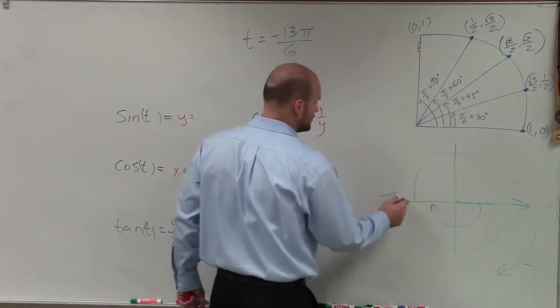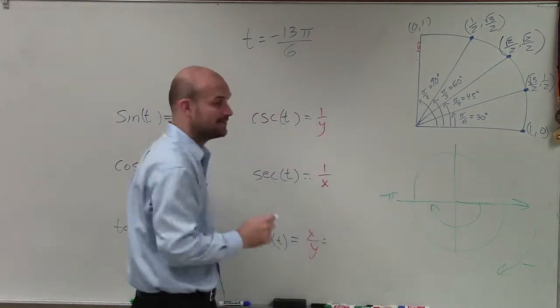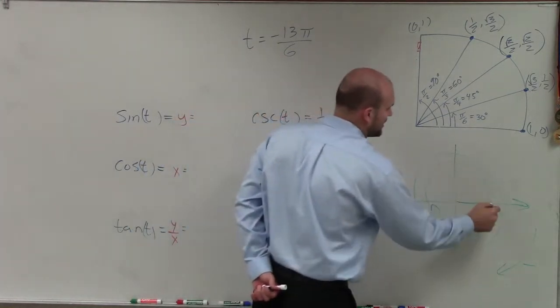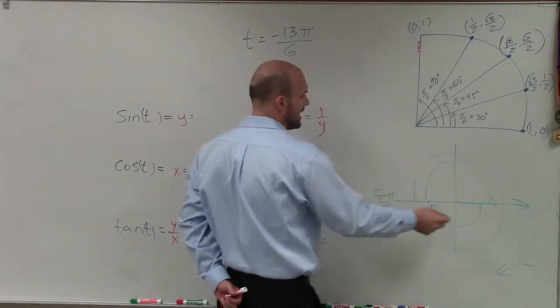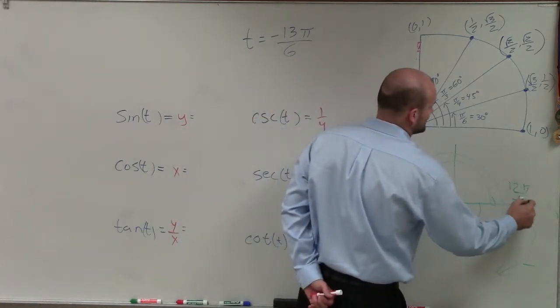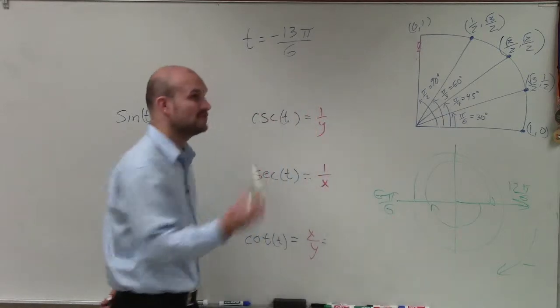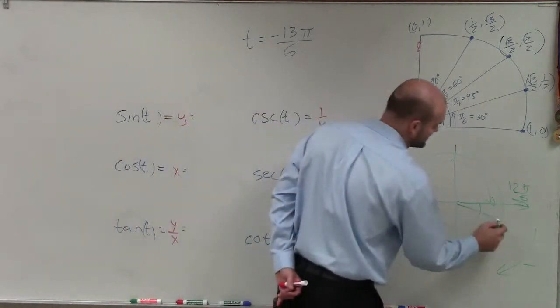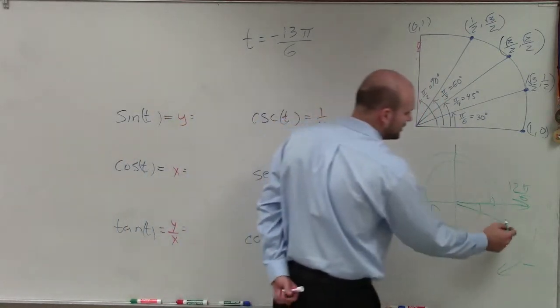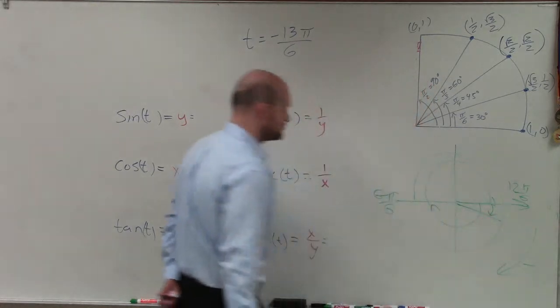Well, halfway around a circle is what we call π. Well, since I have a denominator of 6, that's going to be 6π over 6. So all the way around would be 12π over 6. And you could see that we have a negative 13π over 6. So it's just going to be 1 sixth past half of this circle is going to be my eventual angle.